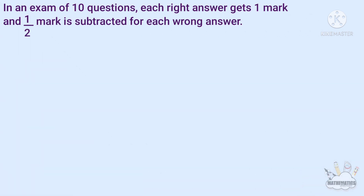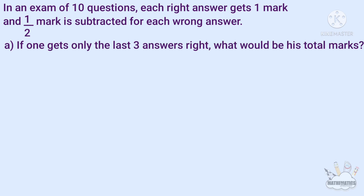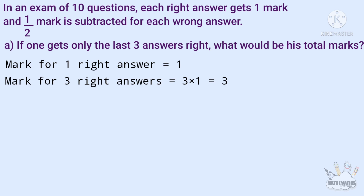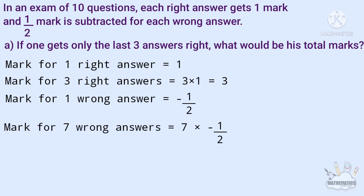In an exam of 10 questions, each right answer gets 1 mark and half mark is subtracted for each wrong answer. If one gets only the last 3 answers right, what would be his total marks? Mark for 3 correct answers is 3. Mark for 1 wrong answer is minus half. So marks for 7 wrong answers is equal to 7 into minus 1 by 2, that is minus 7 by 2.